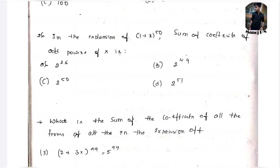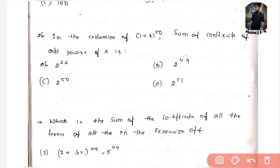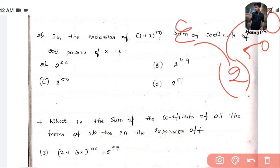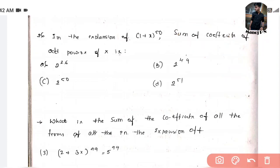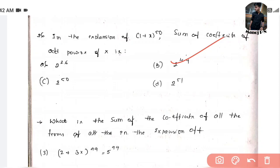Second question: In the expansion of (1 + x)^50, what is the sum of coefficients of odd powers? Putting x = 1 gives 2^50, which contains equal numbers of even and odd power terms. To find just the odd terms, divide by 2: 2^50 / 2 = 2^49. So the answer is option B, which is 2^49.